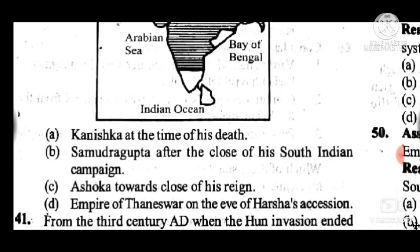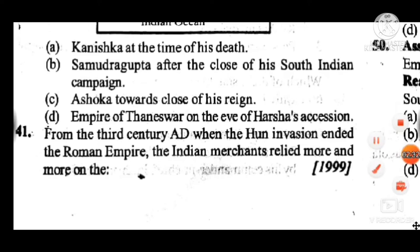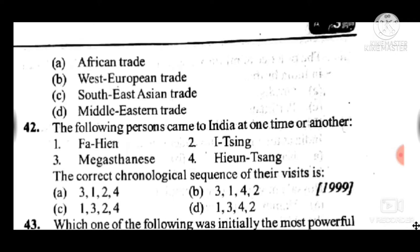Question 41: From the third century AD, when the Hun invasion ended the Roman Empire, Indian merchants relied more and more on — answer is C, Southeast Asian trade. Question 42: The following persons came to India one after another — answer is B: first Megasthenes, then Fa Hien, then Hiuen Tsang, and then I-tsing.